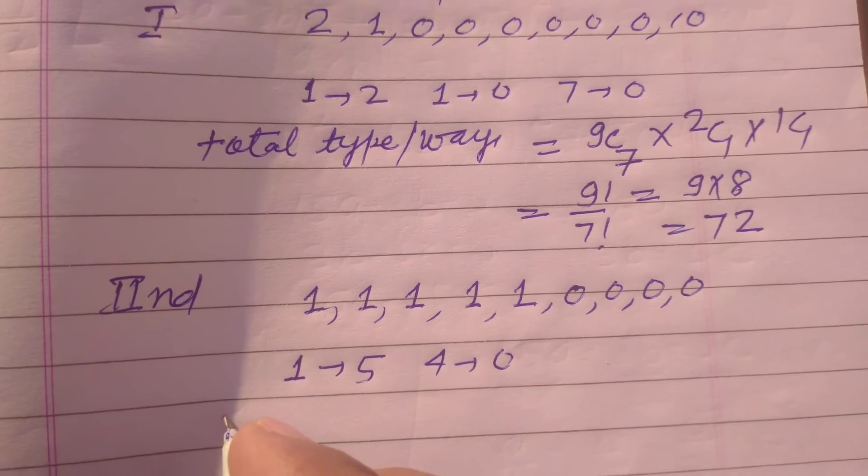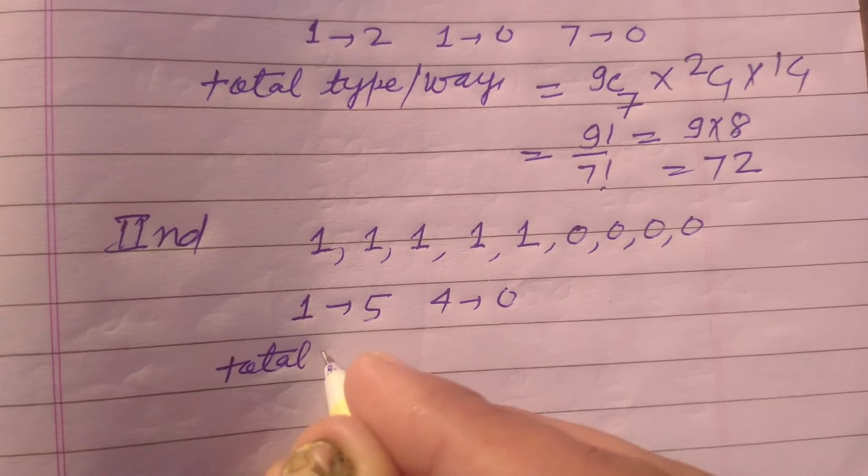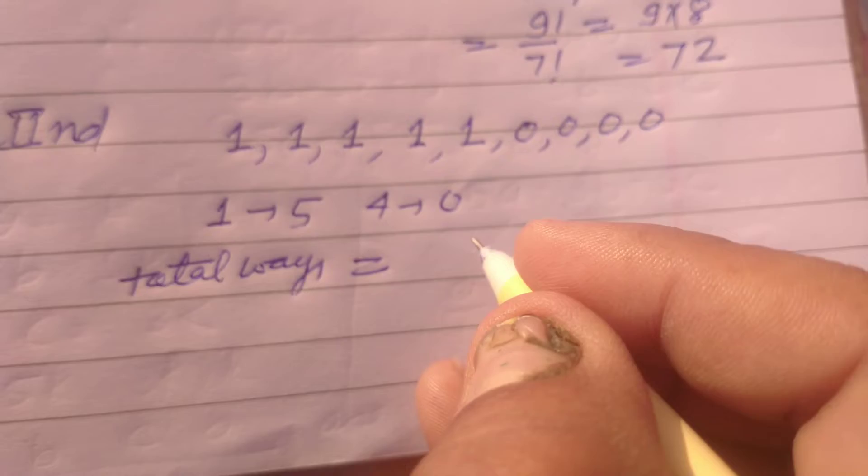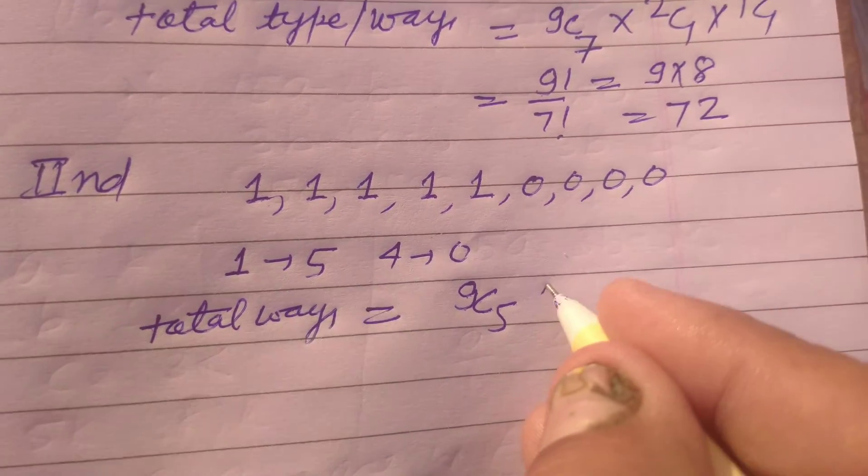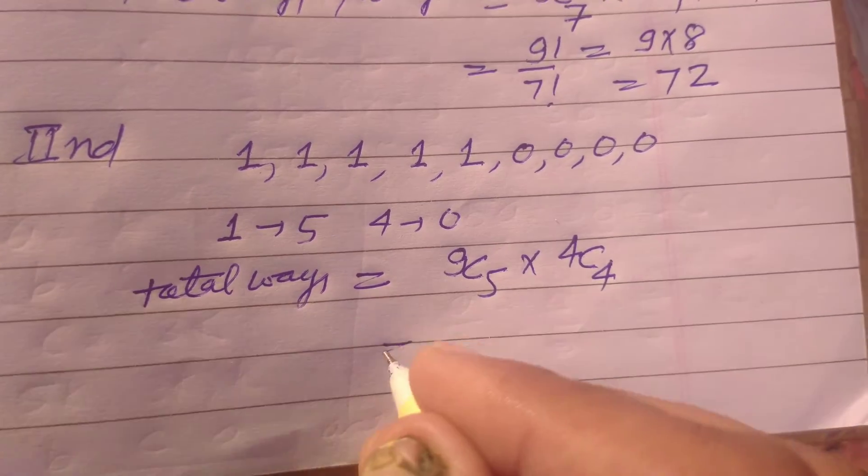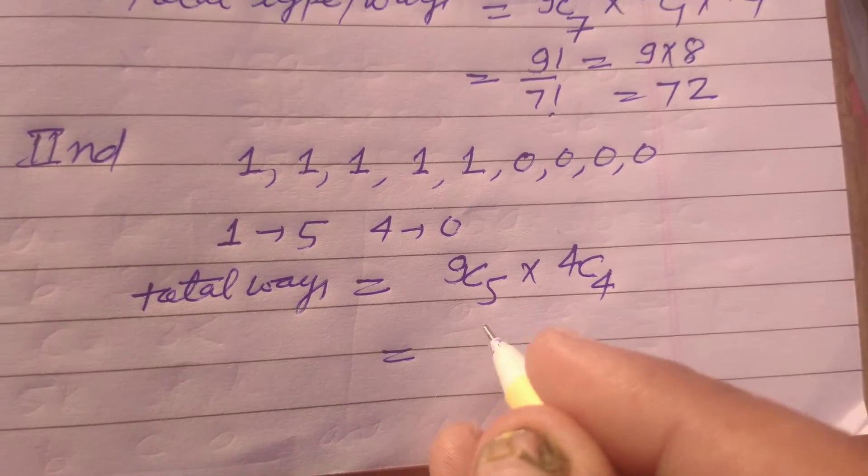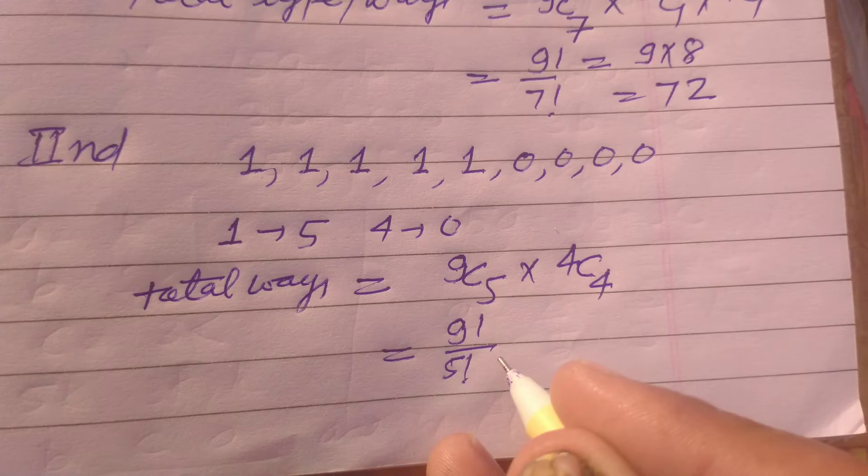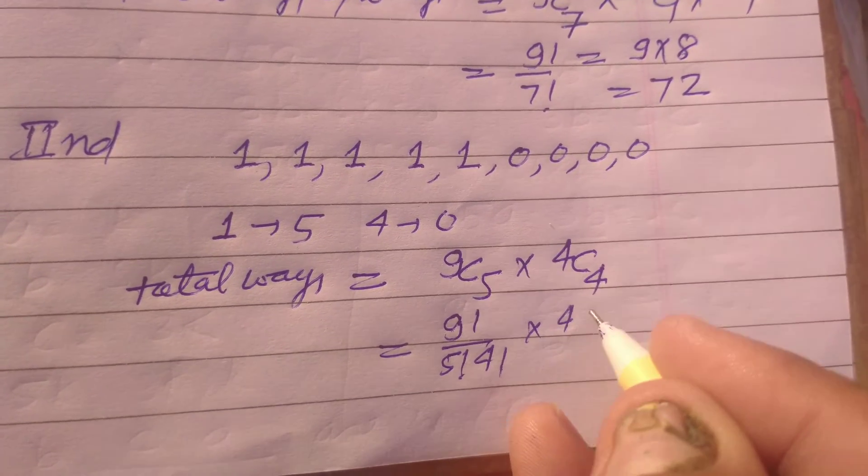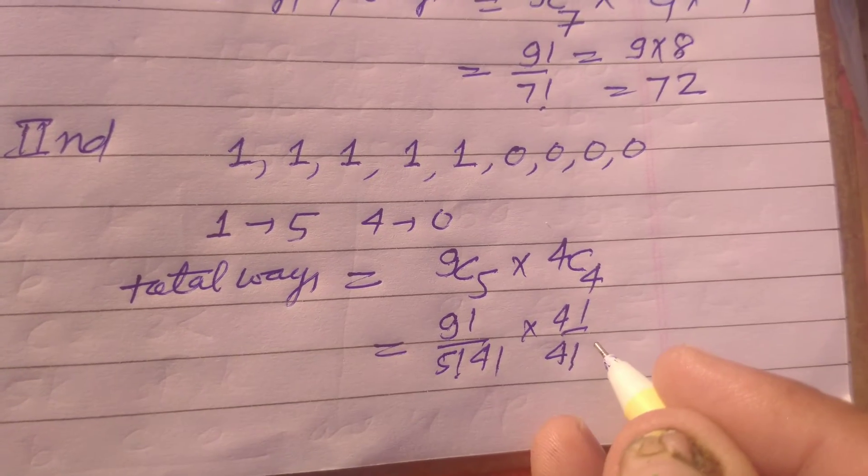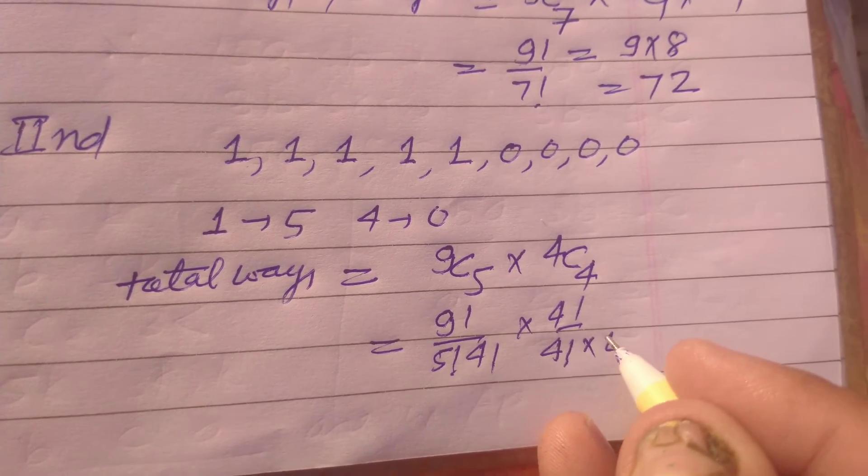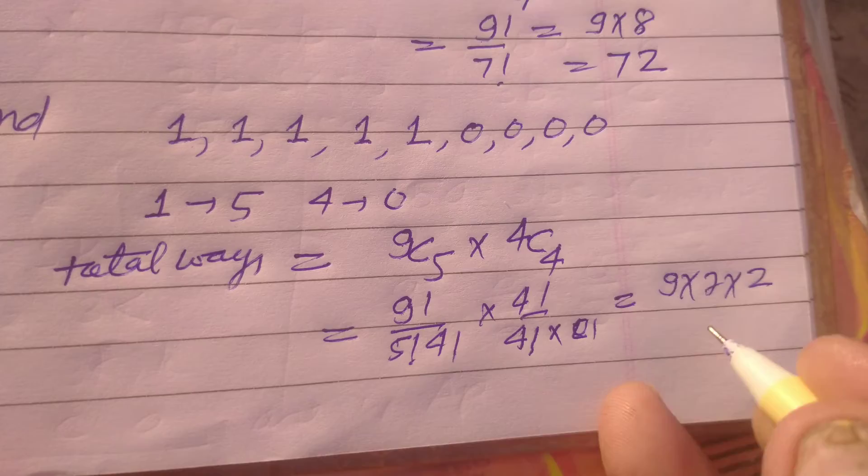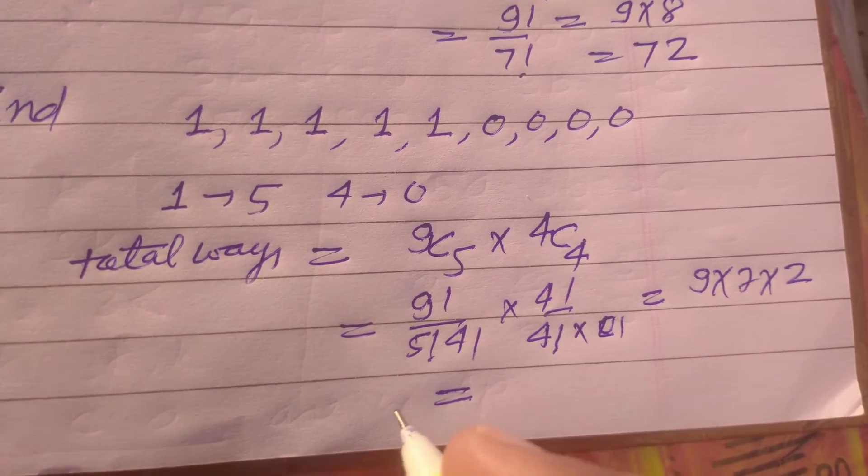So total ways are 9C5 into 4C4, and this will be factorial 9 over factorial 5C4 and factorial 4C4 into factorial 0. So this will be 9 into 7 into 2.